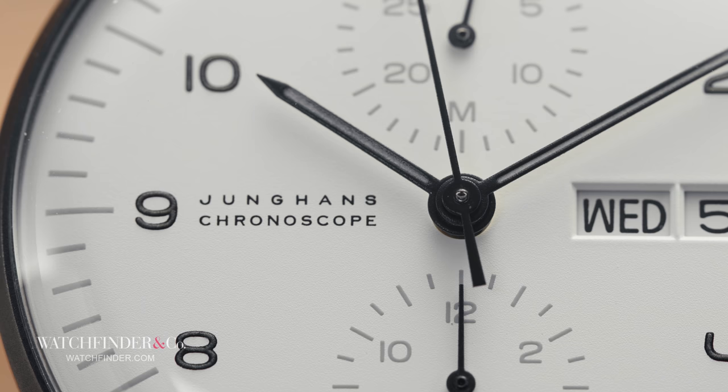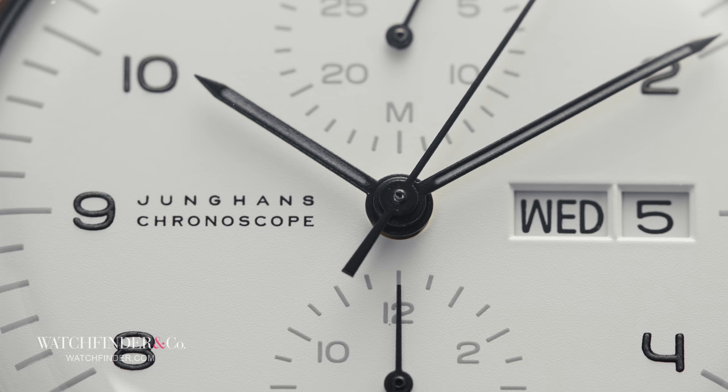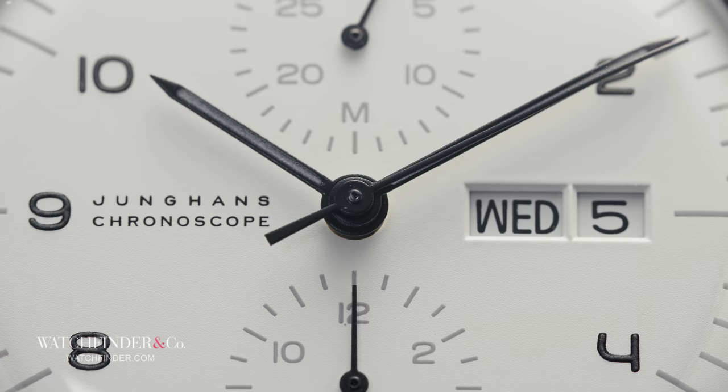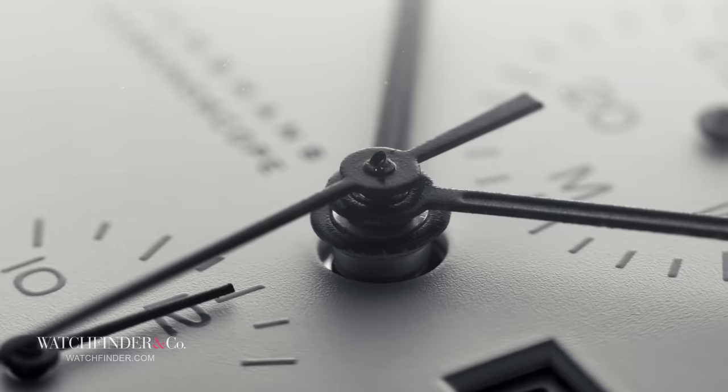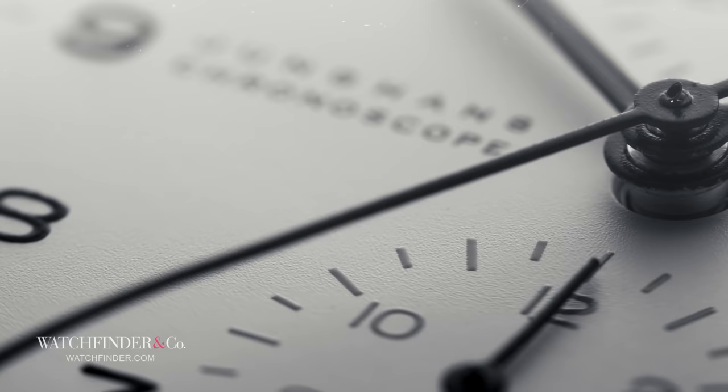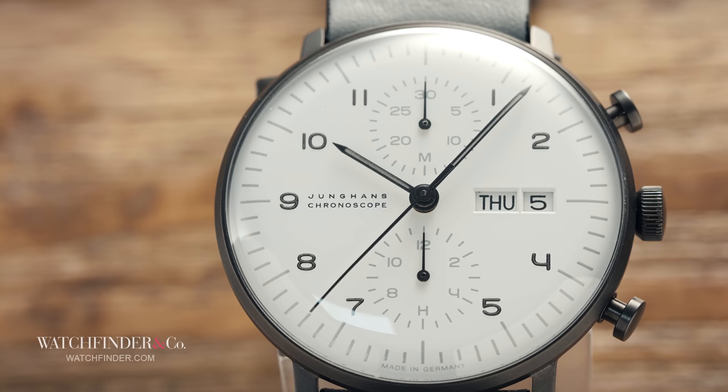So what exactly do we have here with the Junghans Max Bill Chronoscope? First and foremost, a design that feels completely timeless. It could have been penned a century ago, but equally the ink could barely be dry. And that's the beauty of industrial design. Whether Max Bill or Johnny Ive or anyone in between, the mentality is one and the same. Find form in function and never the other way around. That's exactly why this watch looks like it could have just as easily emerged from a Californian design studio as much as it could a Swiss one.